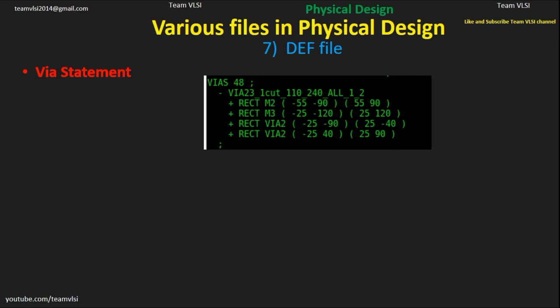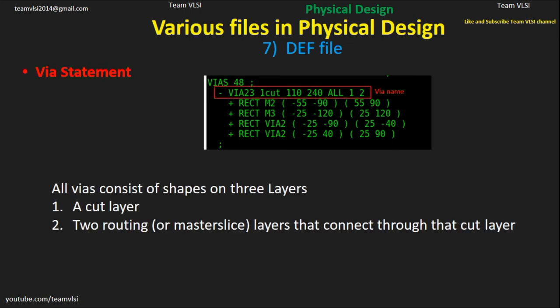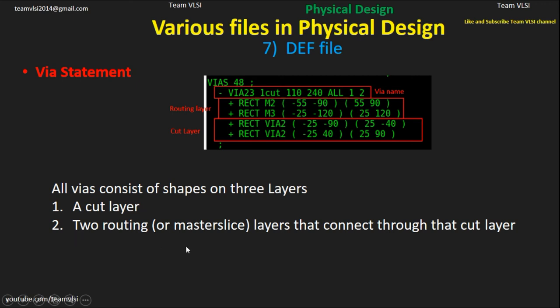Next is the VIA statement. First is the VIA name, then routing layers, then cut layers. All VIAs consist of shapes on three layers: a cut layer and two routing or master slice layers that connect through that cut layer.